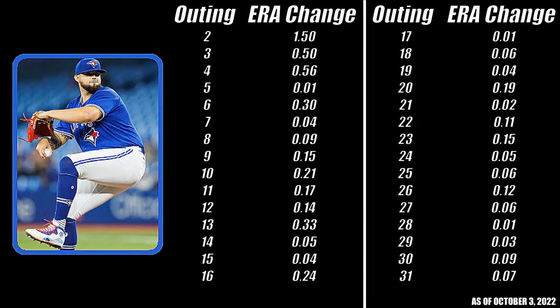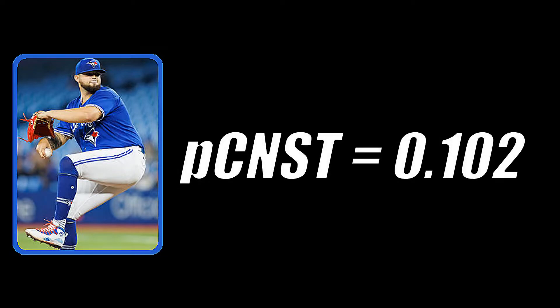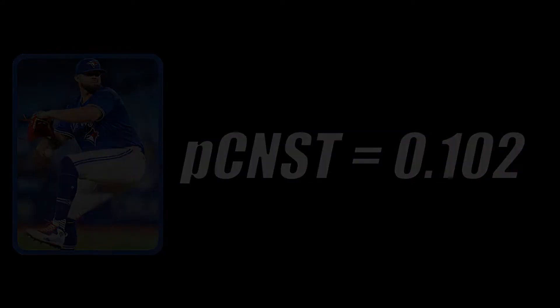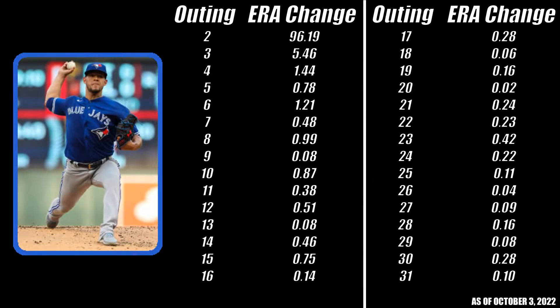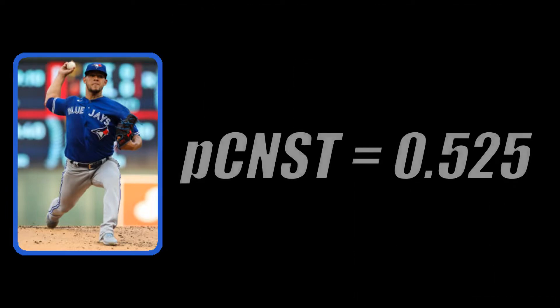Here's Alec Manoa's ERA changes from game to game throughout 2022. From these, we get a consistency of .102. This really doesn't mean anything yet though, because we have nothing to compare it to. So let's do the same for Jose Barrios. Here's Jose Barrios' ERA changes throughout the year. They give a consistency of .525. That's worse than Manoa, which holds up nicely.